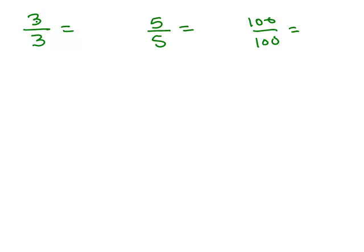So with that in mind, 3 over 3 means 3 divided by 3, that's just the number 1, and 5 over 5 means 5 divided by 5, or 1. 100 over 100 means 100 divided by 100, which is also 1. So in general, if you have the same number in the numerator and denominator, it's going to equal 1. We're going to be using this idea when we deal with equivalent fractions and also with reducing fractions.